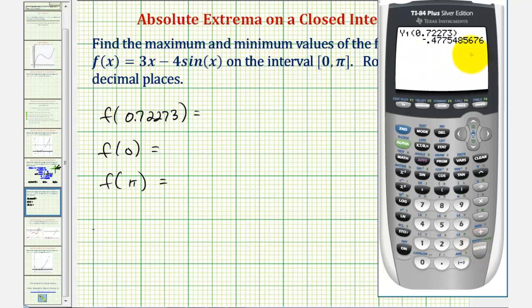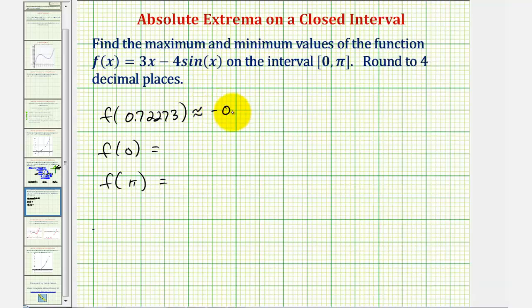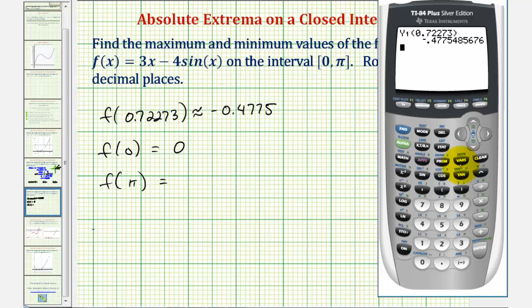Rounding to four decimal places, the function value will be approximately -0.4775. For f(0), notice how we would have three times zero minus four times sine zero. And since sine zero equals zero, we'd have zero minus zero or zero. And then for f(pi), again we'll press vars, right arrow, enter, enter. And in parentheses, pi.